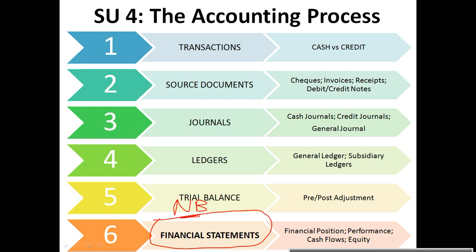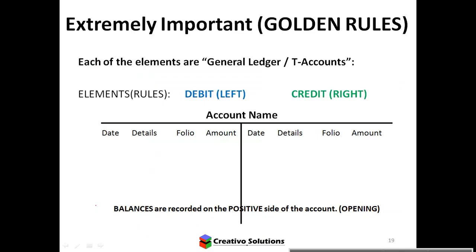In AC 1501 you probably did quite a lot of journals and ledger work, and the trial balance was something you had to draw up. In this module, you'll be given blank financial statement templates and you'll have to create them based on information given — starting from the trial balance. So in 1502 you start at the trial balance and work through to the financial statements. It's more about adjustments and processing the actual statements rather than journals and source documents.